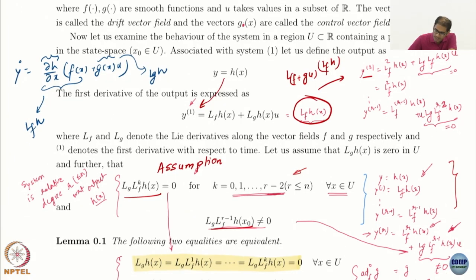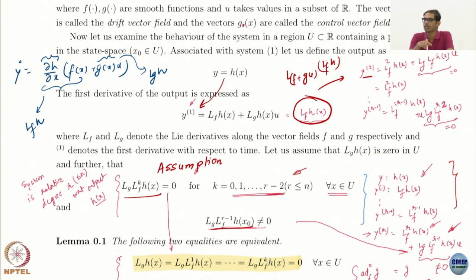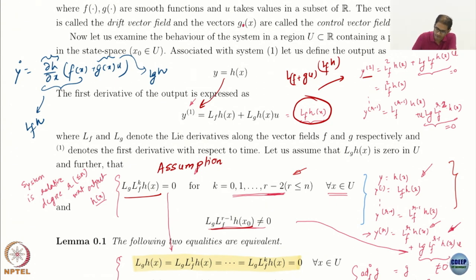Relative degree is defined so that it tells you in which derivative of the output you get the input. h is the output function, so you keep taking successive derivatives, and these are the terms that appear connected to the control in the successive derivatives.